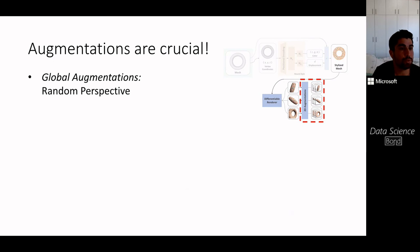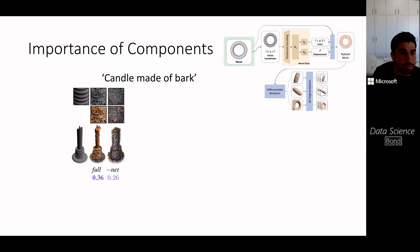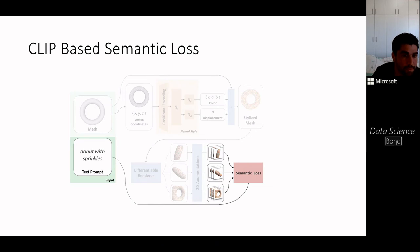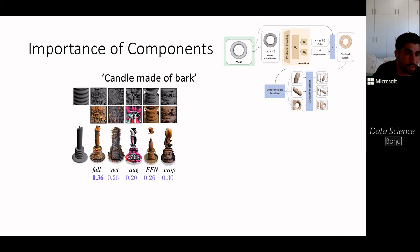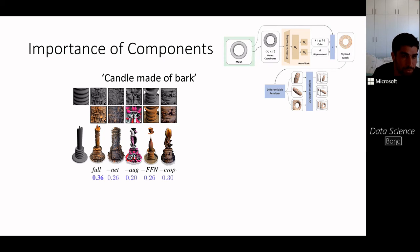Augmentations are very important. We produce both global augmentations — random perspective augmentation — and local augmentations. The ablation study shows that positional encoding, implicit networks, and augmentations are all critical components. Without them, either no fine detail is produced, or unnatural stylization results. All these components are necessary for high-quality output.